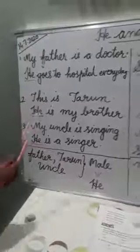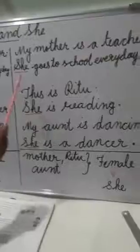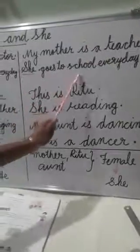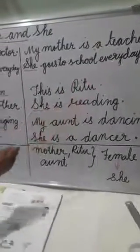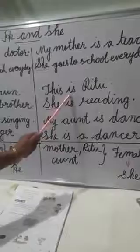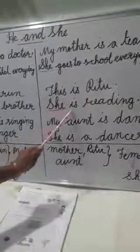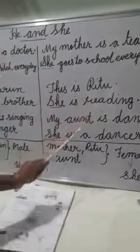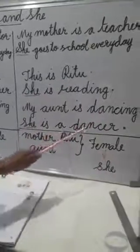Now see: My mother is a teacher. She goes to school every day. This is Ritu. She is reading. My aunt is dancing. She is a dancer.